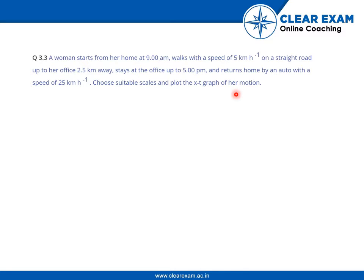We need to plot the XT graph. That means we need to have the value of X as well as T. From the question, it is clear that X is given, but T is not given. The value of X is the distance from home to the office, which is 2.5 km.